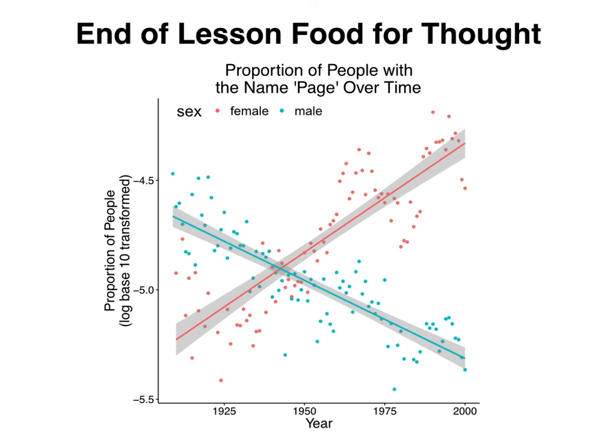Now we can see that there's a clear effect of year, but it's different for each sex. For females, the name Page became more popular over time, and for males less popular. This looks like a pretty standard interaction. In the next lesson, we'll go over how to handle data sets when you want to look at two variables at the same time, and particularly, interaction between those two variables.